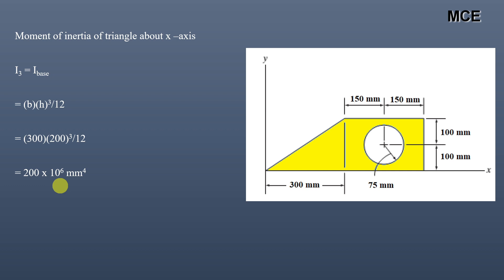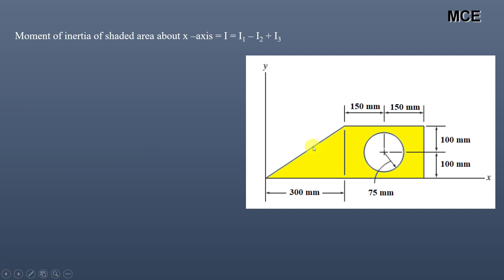After calculating the moment of inertia of each of the three shapes about the x-axis, we calculate the moment of inertia of the shaded (composite) area. The circle has been subtracted from the figure, so we only calculate the moment of inertia of the shaded yellow area. Therefore, the moment of inertia of the shaded area about the x-axis is I₁ − I₂ + I₃, where I₂ is subtracted because the circle has been cut out.